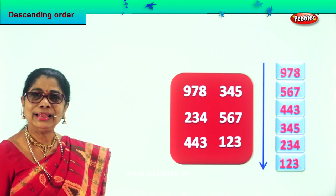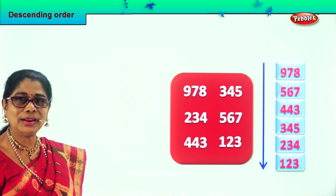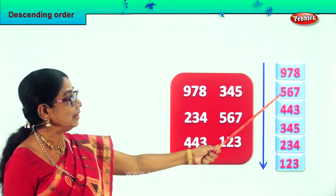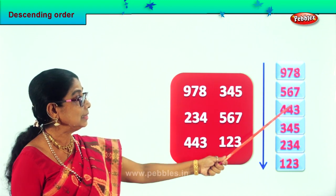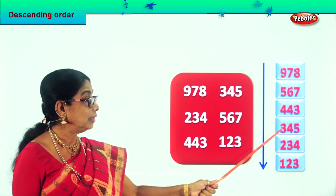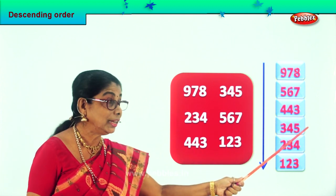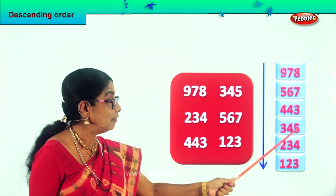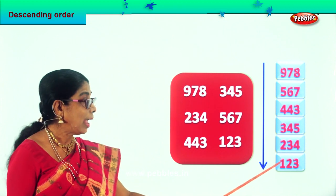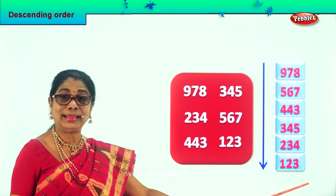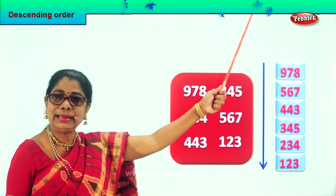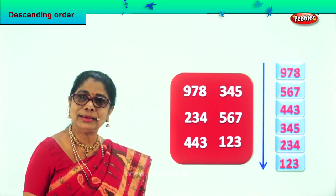Shall we read aloud the descending order numbers? Yes. Nine hundred seventy-eight, five hundred sixty-seven, four hundred forty-three, three hundred forty-five, two hundred thirty-four, and one hundred twenty-three. Did you enjoy arranging numbers in descending order?